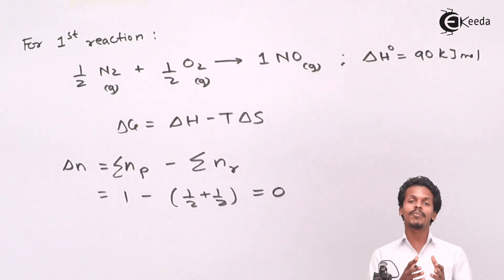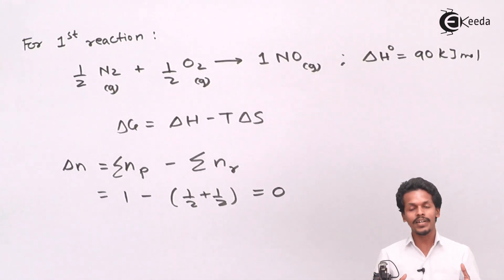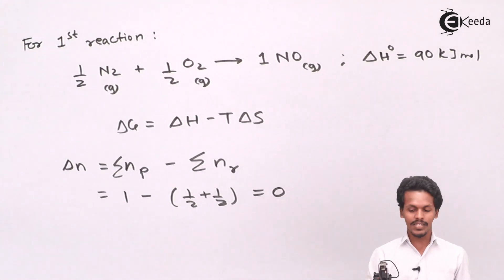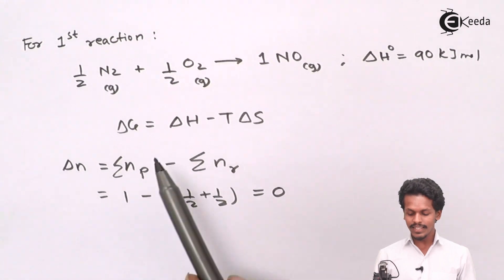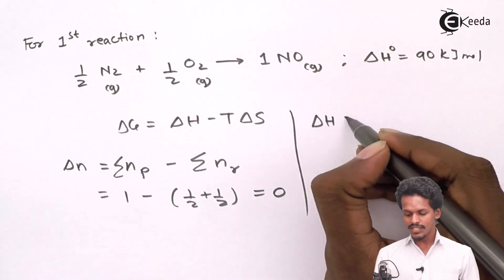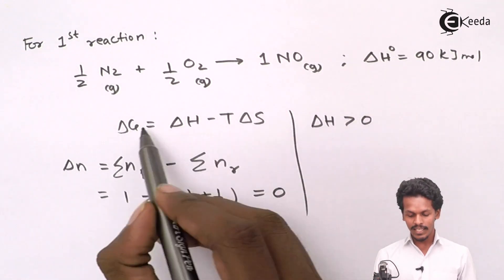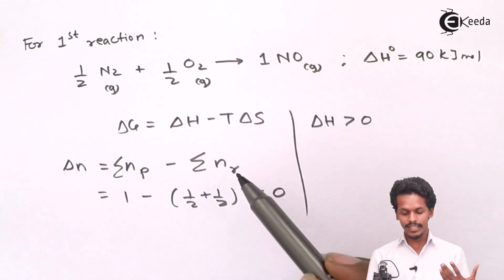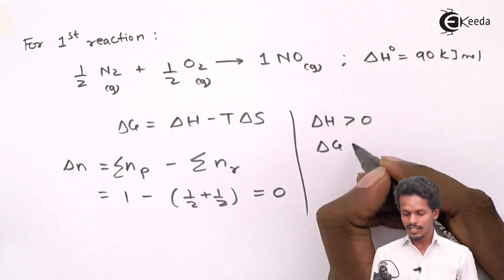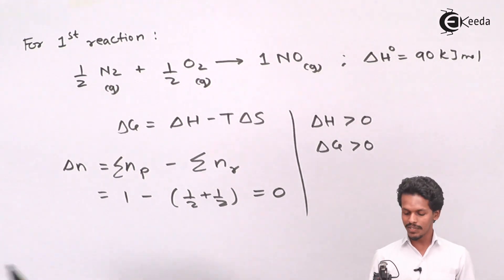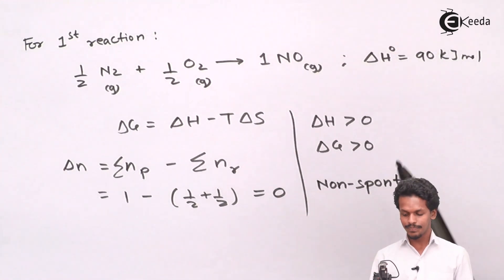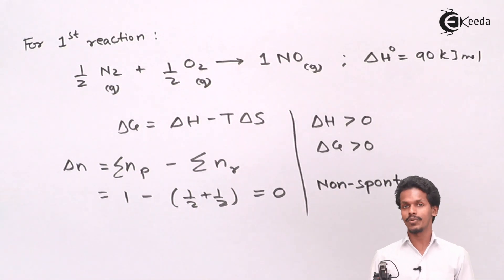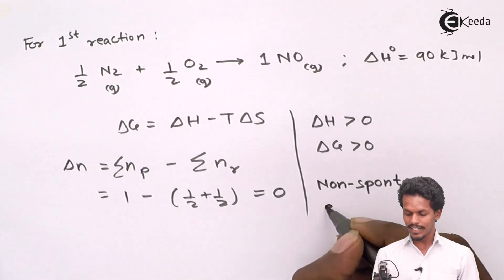If the number of moles had increased (ΔN > 0), we could say the gas expanded and entropy increased, indicating a spontaneous reaction. But here ΔN = 0, so there is no entropy contribution from molar change. Moreover, ΔH is positive (greater than 0), which means ΔG will also be positive — greater than zero — making this a non-spontaneous reaction. The positive ΔH also confirms this is an endothermic reaction.